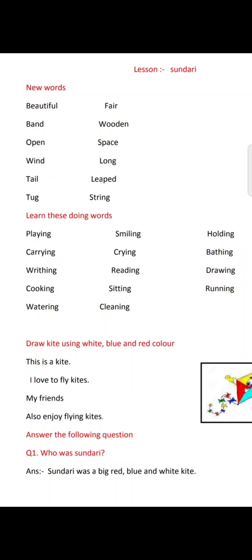Sundari was a big, colorful kite, made by a very cute boy whose name was Bobby. The kite was very happy because Bobby made it with various beautiful colors. That's why Bobby called this kite 'Sundari'. Sundari means beautiful — a kite which was very beautiful.